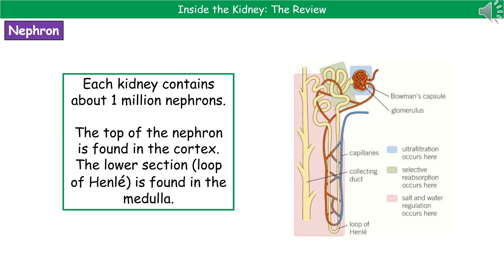When we zoom in on what's actually inside the kidney, the structures that carry out the most important part — the filtering process — are called nephrons. Inside each of your kidneys, you've got about one million nephrons, so you can imagine they're very, very small. The top of the nephron is found within the cortex, and the lower section, including the loop of Henle, is found in the medulla.